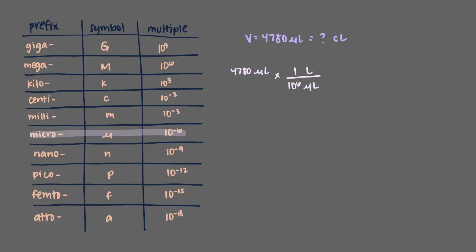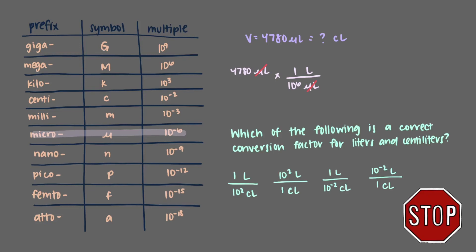Don't reach for your calculator just yet. Let's cancel out our units. Here, the microliters in the top and bottom cancel. And if we were to do the arithmetic, we would get an answer in liters. But we don't want liters. We want centiliters, so we won't stop just yet. Which of the following is a correct conversion factor for liters and centiliters?